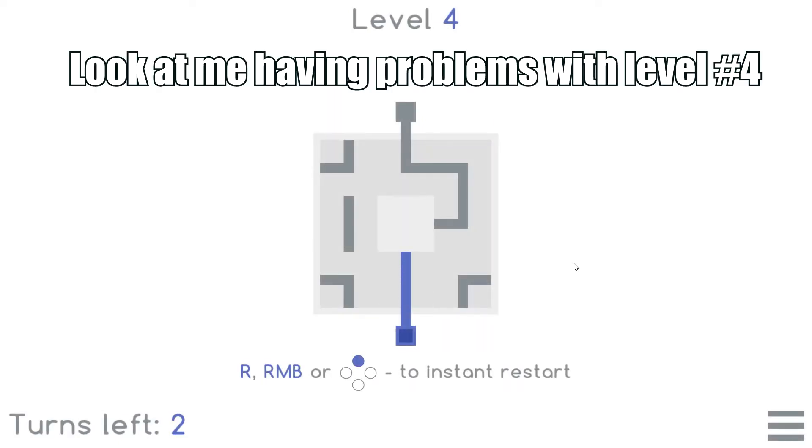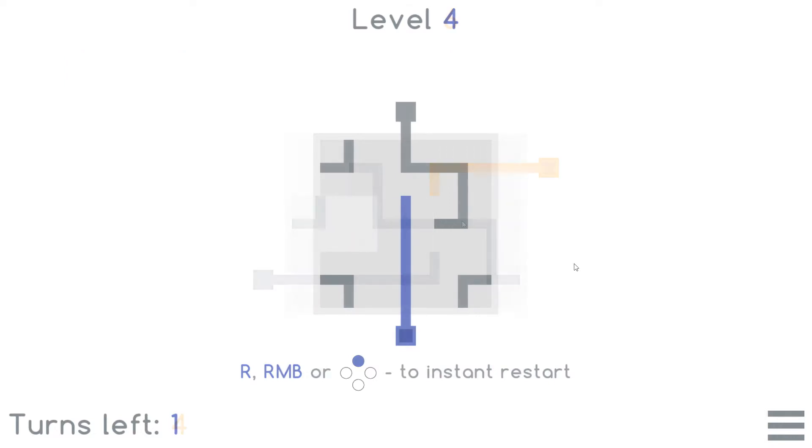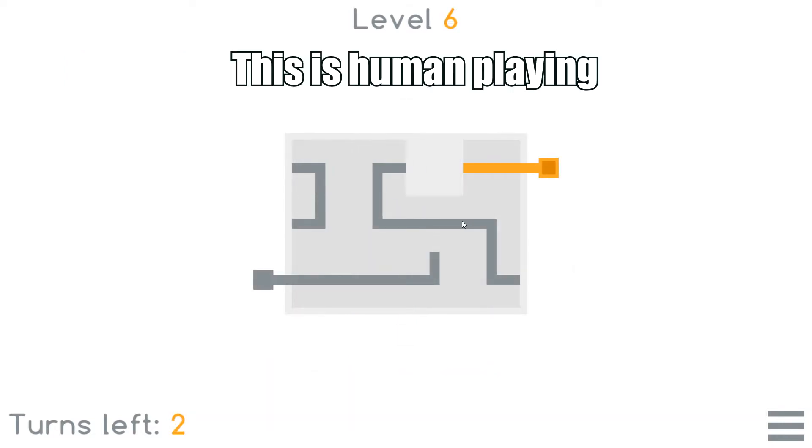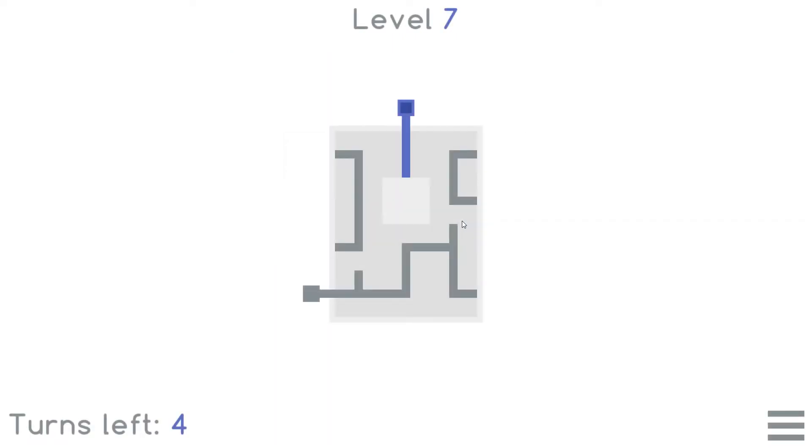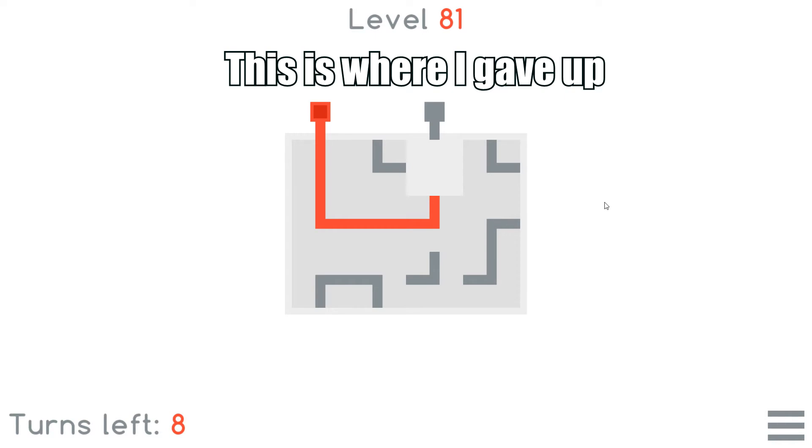If you fail to solve the puzzle in a set amount of moves, you lose. Start over. If you manage to do it, you proceed to the next level. The game has a total of 100 levels that are getting progressively difficult. Playing casually, I gave up and started coding at level 81.